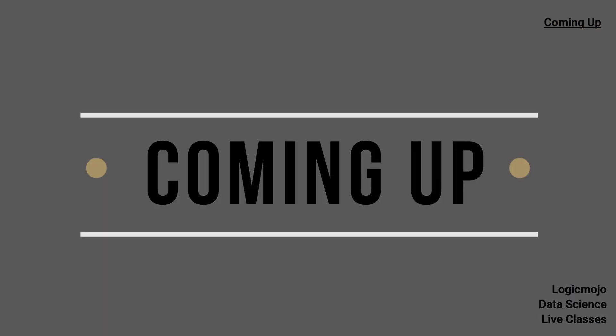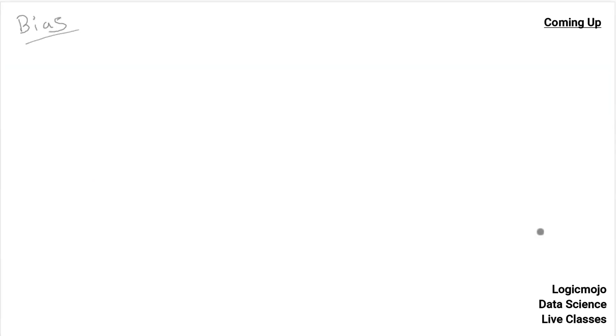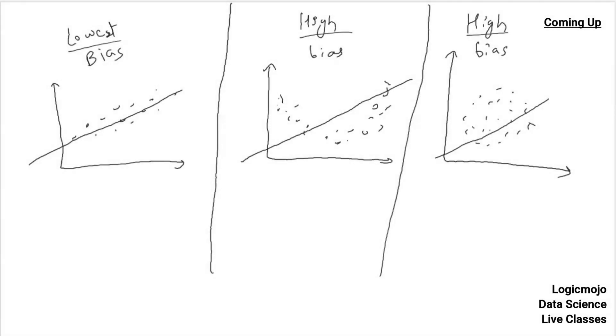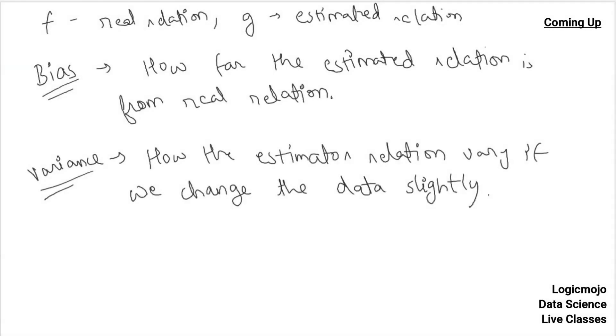Today's topic is bias-variance tradeoff and hyperparameter tuning. We'll go through both of these — the first is a concept and the second is a simple technique to improve your model. But first, let's understand what bias is. So bias is how far we are from the original truth. And variance — I'll write a quick definition here.